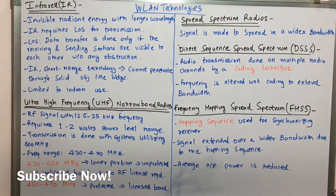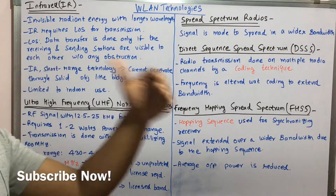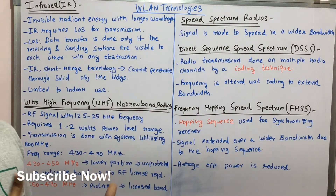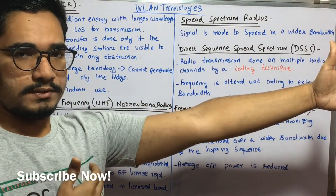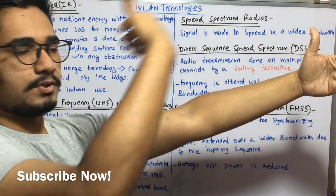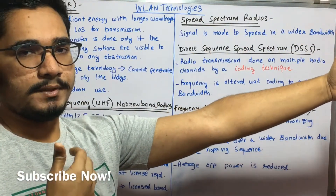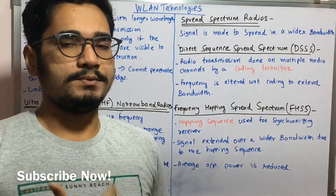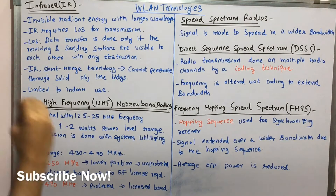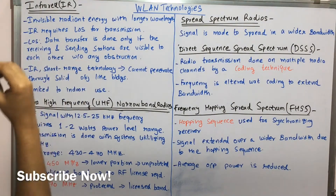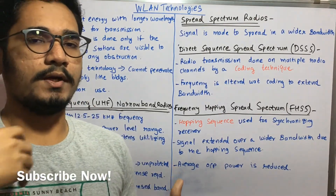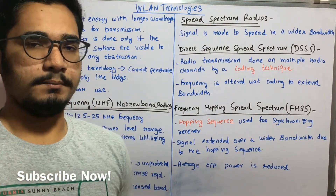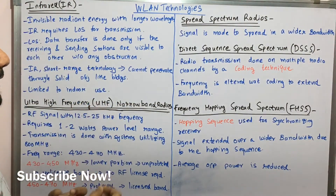IR requires a line of sight for transmission. Line of sight means data transfer is done if and only if the receiving and sending stations are visible to each other without any obstruction. So if Station 1 is here and Station 2 is here, they should be able to see each other with no obstruction between them. Infrared is a short-range technology that cannot penetrate solid objects like buildings, unlike Wi-Fi signals which can pass through bricks or cement.